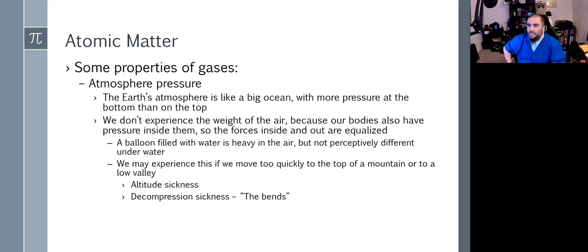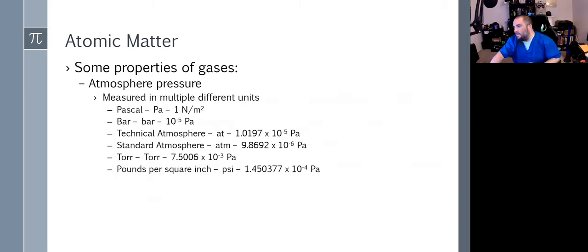We usually measure atmospheric pressure in different measurements. The typical one is a Pascal. One Pascal is our normal air pressure. We measure it in bars. But usually in the United States, we use PSI, which is pounds per square inch. In science, we typically use the Pascal as our measurement of pressure.